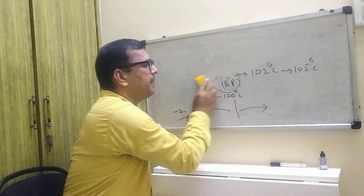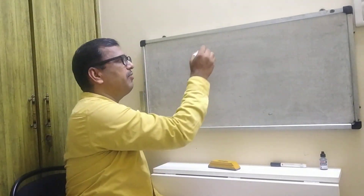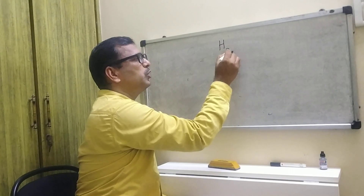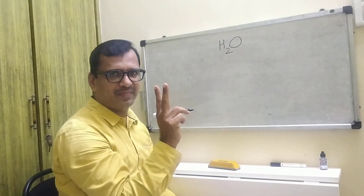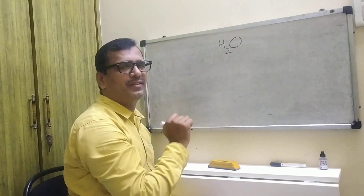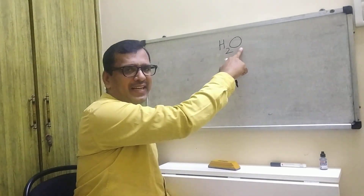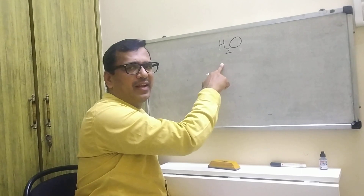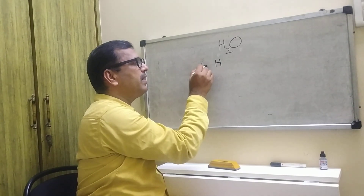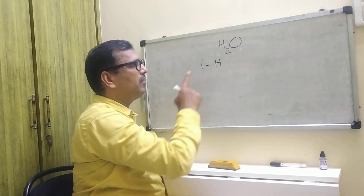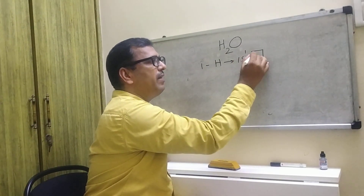The chemical formula of water is H2O — dihydrogen monoxide. It contains 2 hydrogen atoms and 1 oxygen atom. Hydrogen has atomic number 1 and electronic configuration 1s1, meaning it contains only 1 electron. Oxygen has atomic number 8 and electronic configuration 1s2, 2s2, 2p4 — that is 2 plus 2 plus 4 equals 8 electrons.